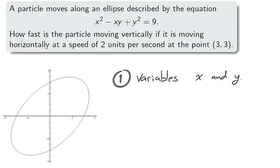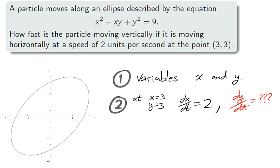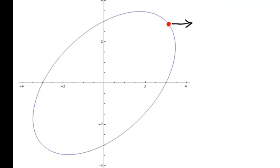1. We have two variables, x and y. 2. We know that when x equals 3 and y equals 3, that dx dt, the horizontal rate of change, is 2. We need to determine dy dt, the vertical rate of change. Notice on our graph, at the point we are told that the particle is moving horizontal at 2 units per second. That means that we're moving to the right. Seeing how the ellipse turns, we should anticipate that the vertical rate of change is negative.